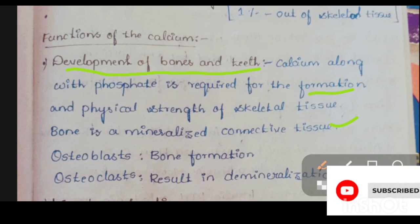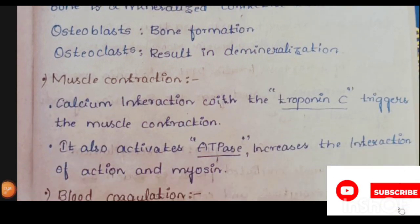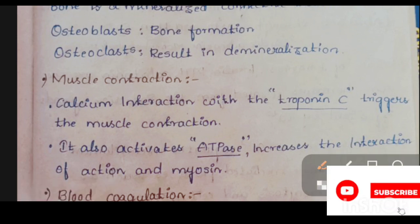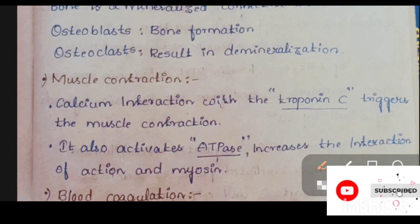Bone consists of osteoblasts and osteoclasts. Osteoblasts are cells that are helpful for bone formation, whereas osteoclasts result in demineralization — the opposite of osteoblast function. So osteoblasts help in the formation of bone, whereas osteoclasts destroy or demineralize the bone.